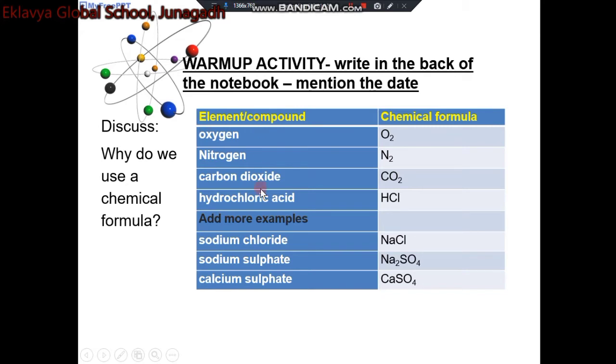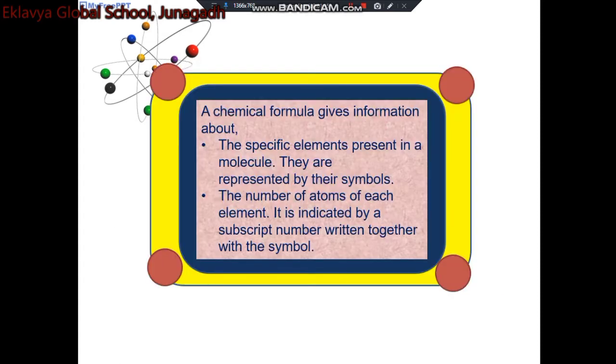Now tell me, why do we use a chemical formula? A chemical formula gives information about the specific elements present in a molecule. They are represented by their symbol, the number of atoms of each element, and it is indicated by a subscript number written together with the symbol.